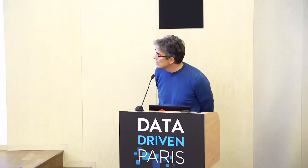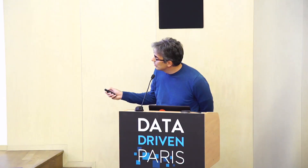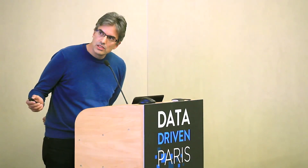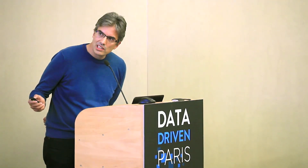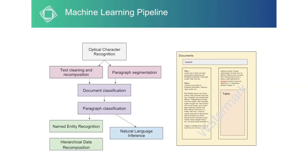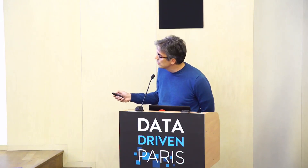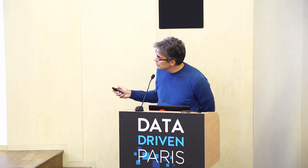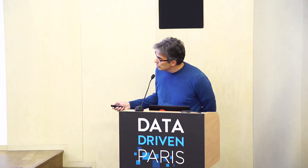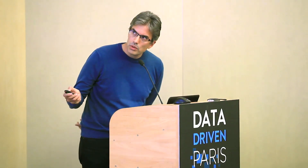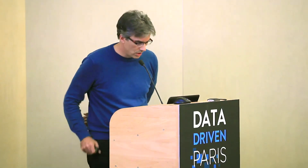Named entity recognition tries to find and spot company names within a sentence. Based on entity recognition, we also do what we call hierarchical data composition — meaning, for example, if a company has an address related to it, we build a tree of dependencies between extracted entities. Finally, we also do what we call natural language inference, where we try to determine if a paragraph means something specific. I'll explain that later.